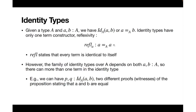We have identity types, and any type has term constructors or canonical generators. For the identity type there is only one term constructor, which is reflexivity. Reflexivity, for a type A and a term a : A, has the type of A being identical to itself — so reflexivity says that every term is identical to itself.